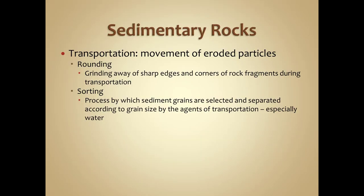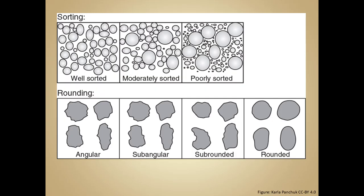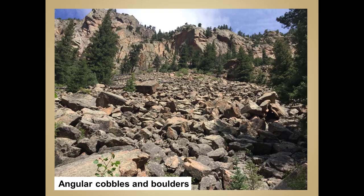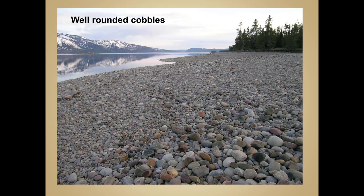Now that we've talked about the different grain sizes, let's talk about the processes at work as these grain sizes are being transported via wind, water, or even ice. The first process is called rounding — simply the grinding away of the sharp or angular sides of a rock fragment as it's tumbled, rolled, or ground against other rocks during transportation. Essentially, a rock becomes much more rounded the further it moves from its source.